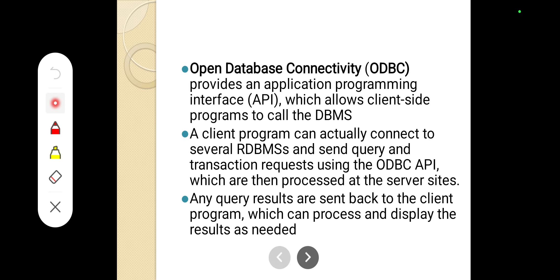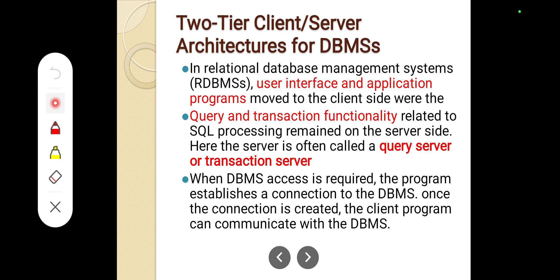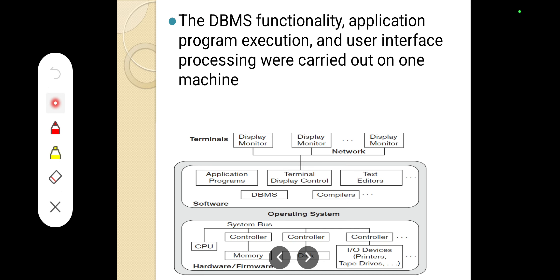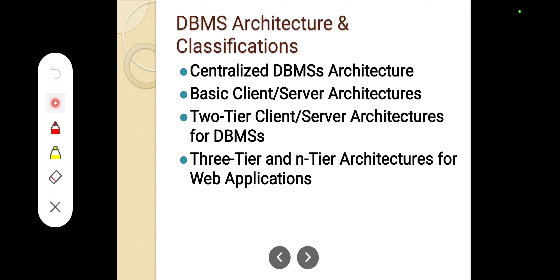So the classification of DBMS architectures includes: centralized architecture, basic client-server architecture, two-tier client-server architecture, and three-tier architecture. That is the concept. Thank you.